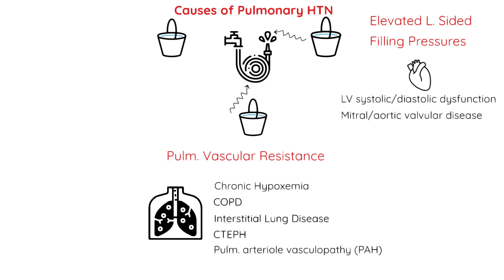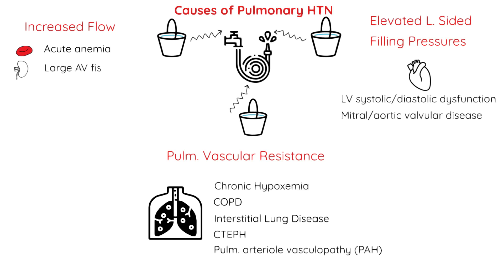Lastly, in the third bucket, think about causes of increased flow through the pulmonary vasculature. High output through that garden hose will also cause high pulmonary pressures. Some high output states include acute anemia, large AV fistulas in patients on hemodialysis, and in patients with cirrhosis where there's a low systemic vascular resistance.